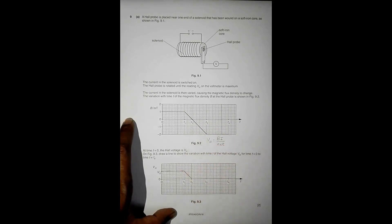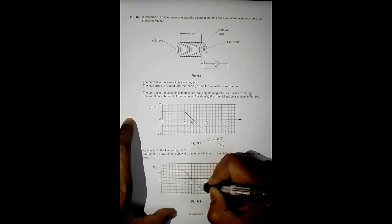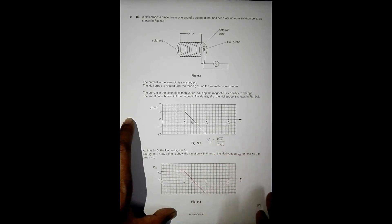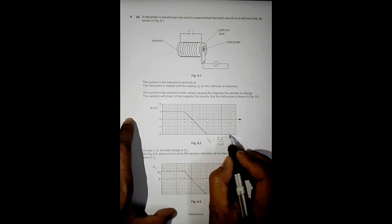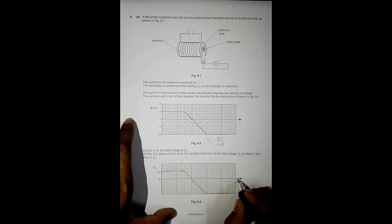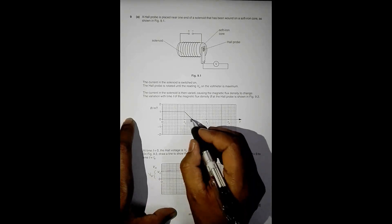You need to use a scale to draw this accurately. From T1 the line goes straight down to T3 in the same manner as B varies. From T3 to T4 the value is constant and negative. The value at T3 should be minus 2V₀, with 0 at T2 and V₀ at the start.